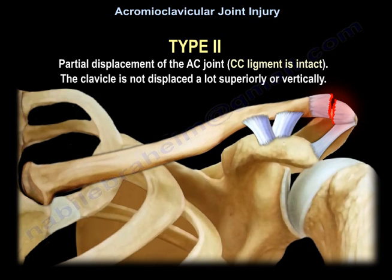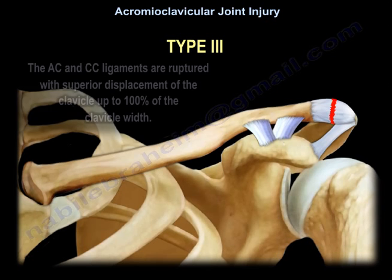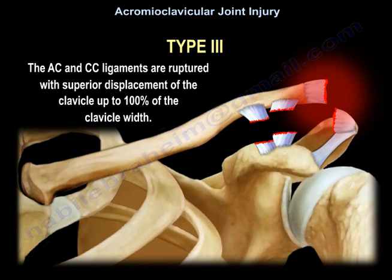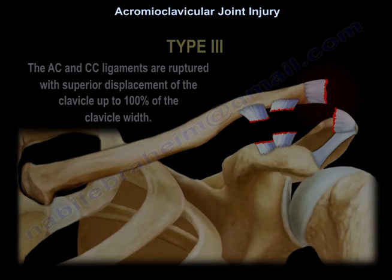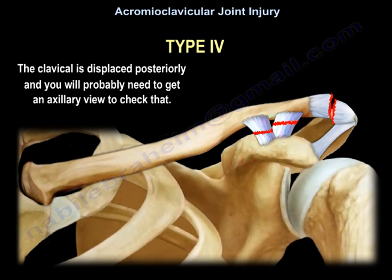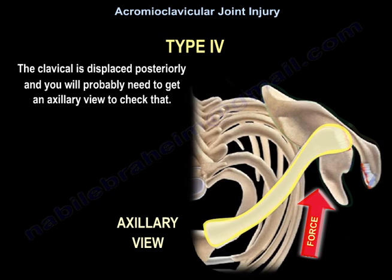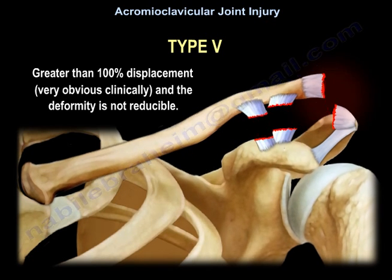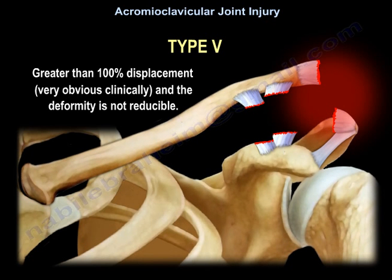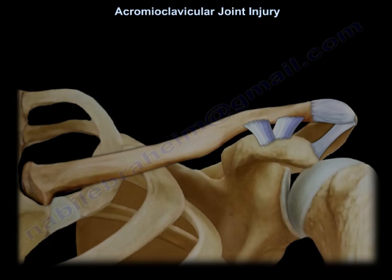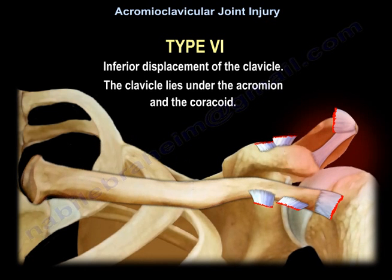Type 3: the AC and CC ligaments are ruptured with superior displacement of the clavicle up to 100% of the width. Type 4: the clavicle is displaced posteriorly — you will likely need an axillary view to confirm that. Type 5: greater than 100% displacement, very obvious clinically and the deformity is not reducible. Type 6: inferior displacement where the clavicle lies under the acromion and the coracoid.